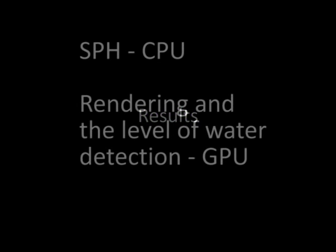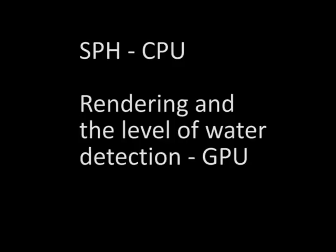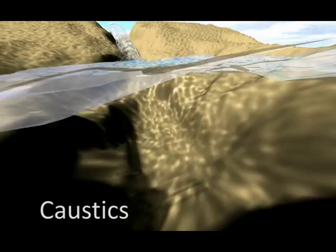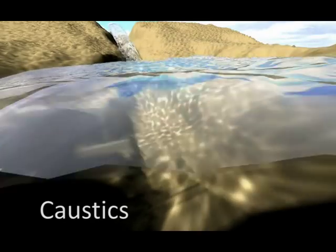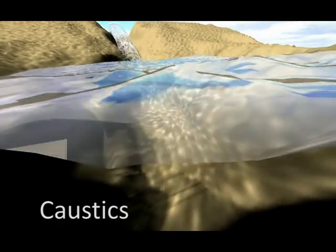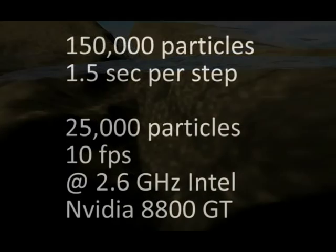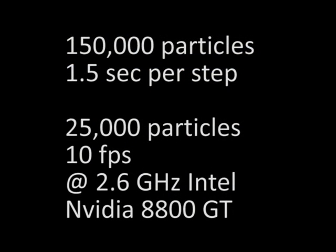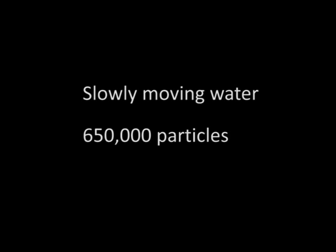We have implemented the SPH erosion simulation on the CPU. The level of water is calculated on the GPU by marching tetrahedra algorithm. We also use GPU to render cube mapping for reflections, and the GPU calculates refractions and caustics. For an average scene with 150,000 particles, the simulation runs at 1 to 10 frames per second on a 2.6 GHz desktop with NVIDIA 8800GT.